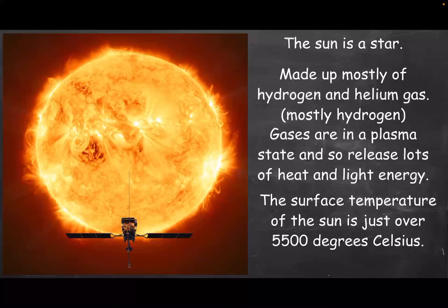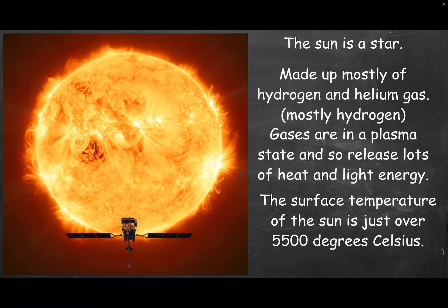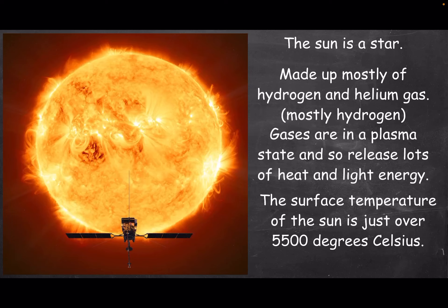The Sun may look like it's on fire, but it's really not. The gases that make up the Sun are in a plasma state and so they release a lot of heat and light energy. The surface temperature of the Sun is just over 5500 degrees Celsius, but the Sun's core temperature reaches way over 10 million degrees Celsius.